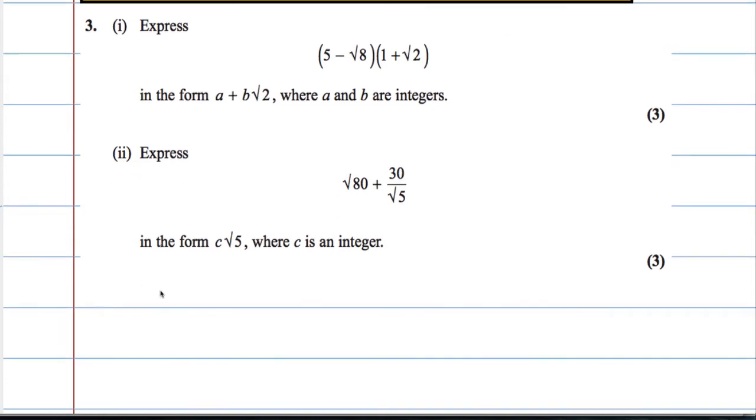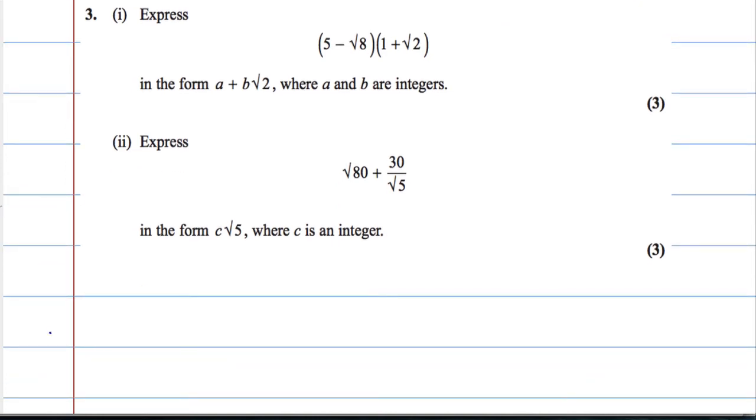So let's concentrate on part one and rewrite what we had: (5 - √8)(1 + √2). Okay, let's just expand it out and see where we go.